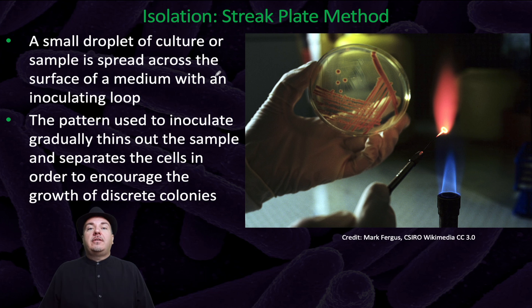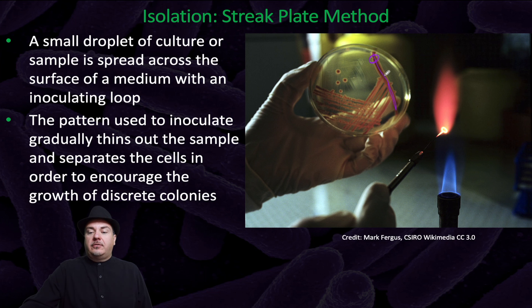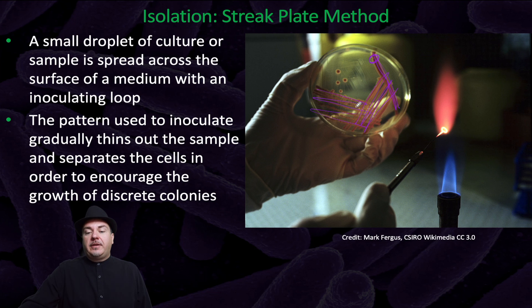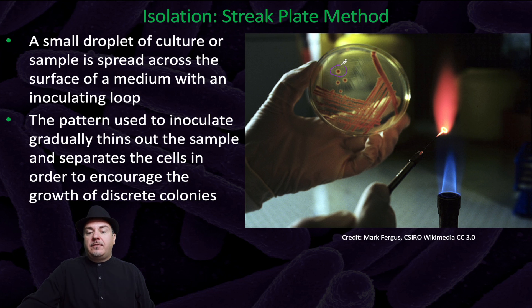The pattern used to inoculate gradually thins out the sample and separates the cells in order to encourage the growth of discrete colonies. You first place a small droplet of culture on the plate and spread it out. Then you flame the loop to kill off all the bacteria currently on it. After the loop is cooled, you spread from that first spread, then flame the loop again and spread again, flame the loop again, and spread again. By doing this pattern, you're able to isolate individual colonies that form from a single cell.